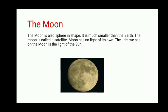The Moon has no light of its own — the light we see on the Moon is the light of the Sun. Have you ever noticed the shape of the Moon appears to change? This is because as the Moon orbits the Earth, only the part on which sunlight is falling is visible to us. When the Moon is new, we only see a small portion because it is facing very little of the Sun. After 14 days, when it faces the whole Sun, we see the full Moon.